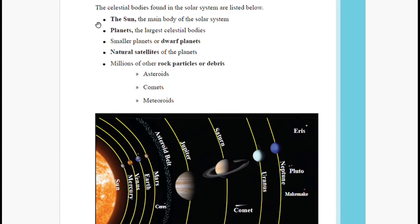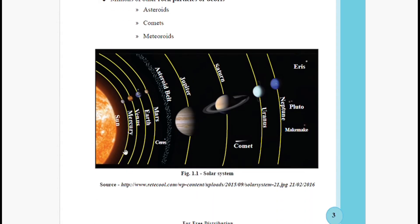The celestial bodies found in the solar system include: the sun (the main body), planets (the larger celestial bodies), dwarf planets (smaller planets), natural satellites like our moon, millions of rock particles called asteroids, comets, and meteoroids. Looking at the picture: the sun, Mercury, Venus, Earth, Mars, asteroid belt, Jupiter, Saturn, comets, Uranus, and Neptune.